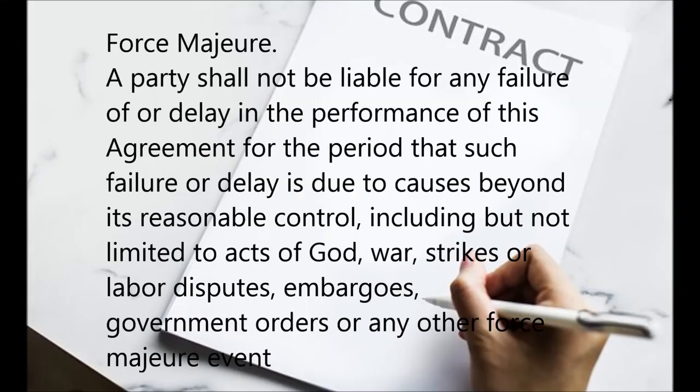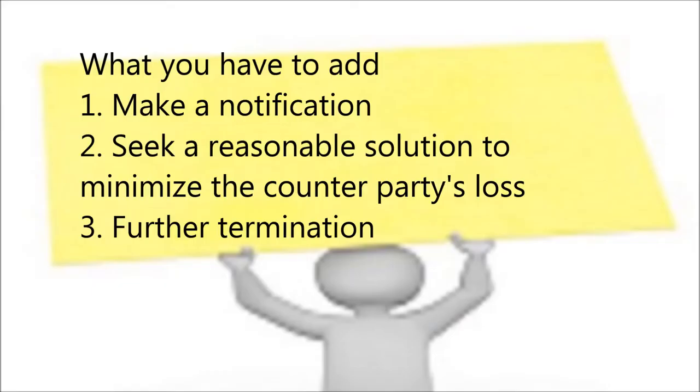Here is an example clause: 'A party shall not be liable for any failure or delay in the performance of this agreement for the period that such failure or delay is due to causes beyond its reasonable control, including but not limited to acts of God, war, strikes, labor disputes, embargoes, government orders, or any other Force Majeure event.' This is an example only and actual cases may vary.